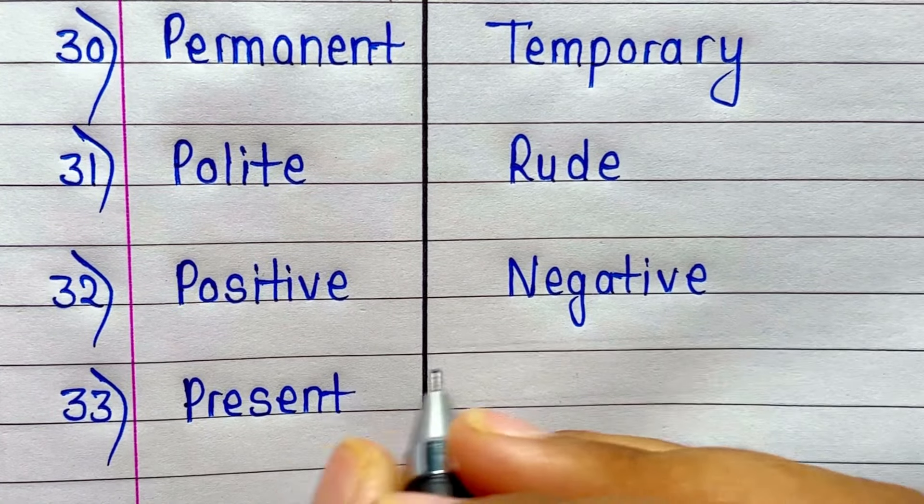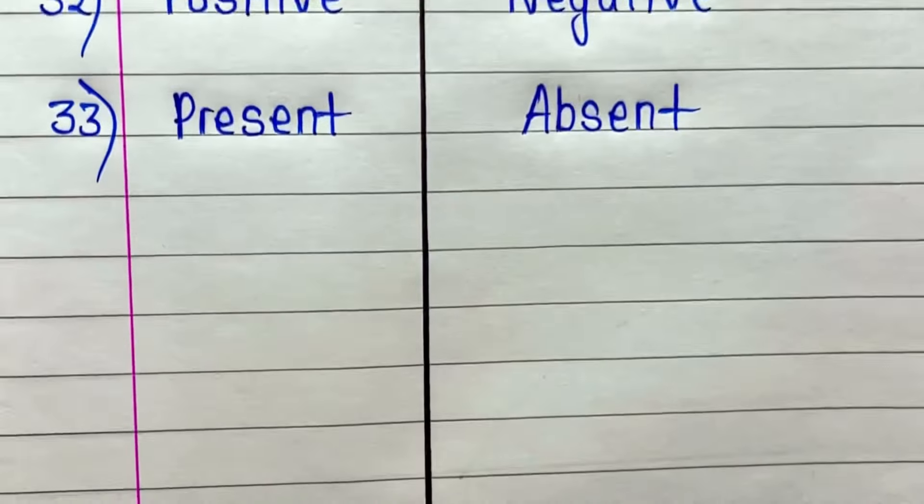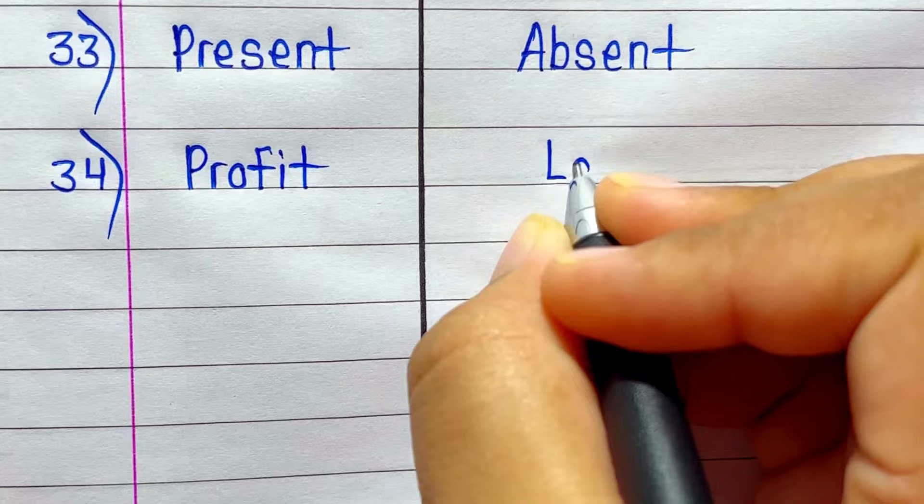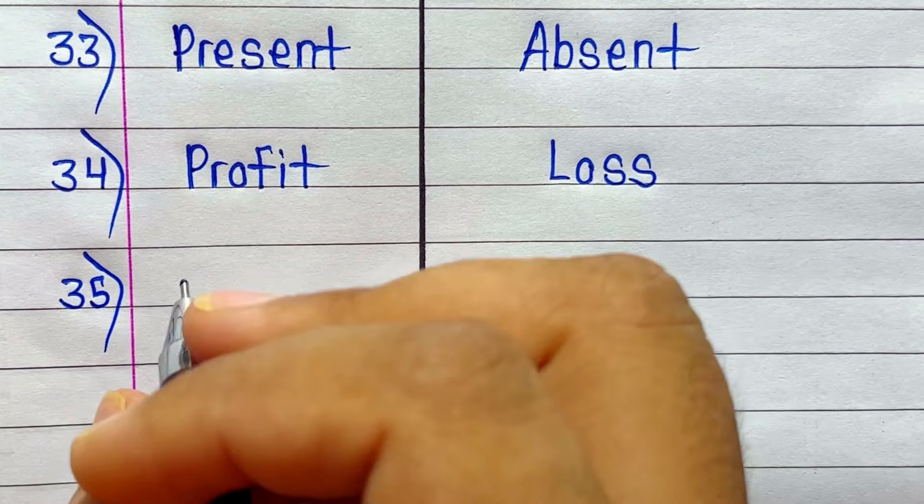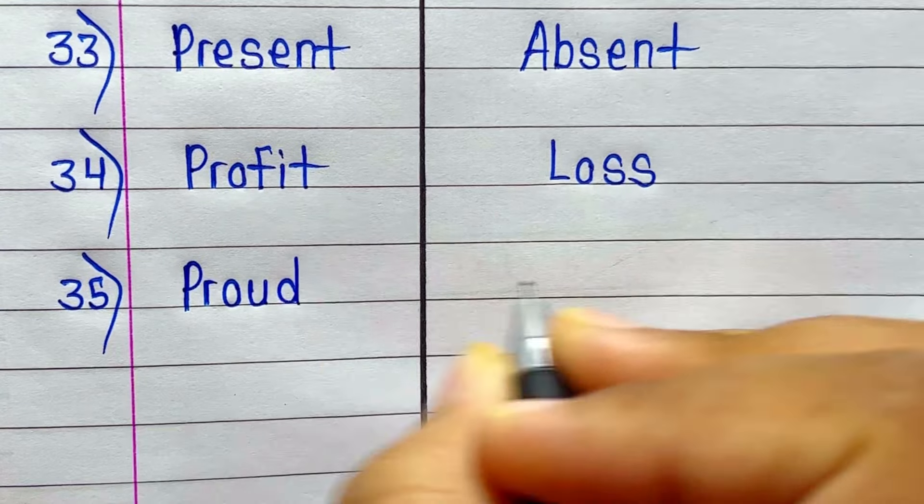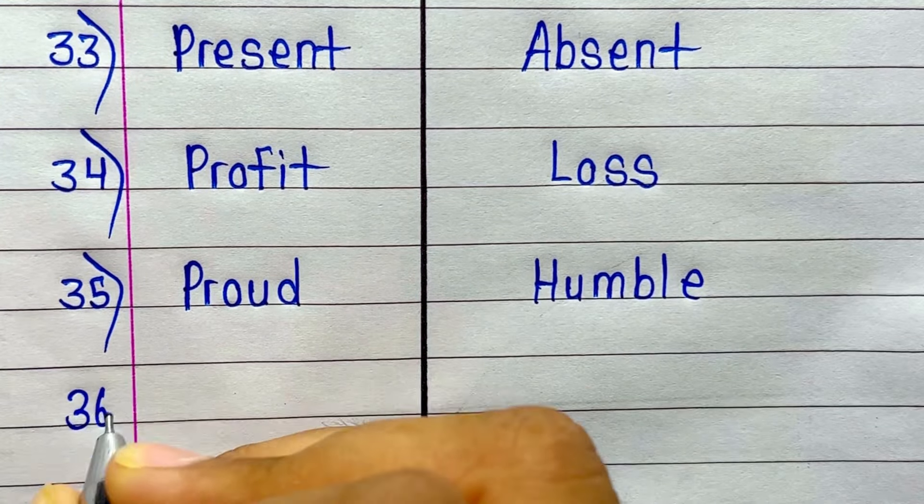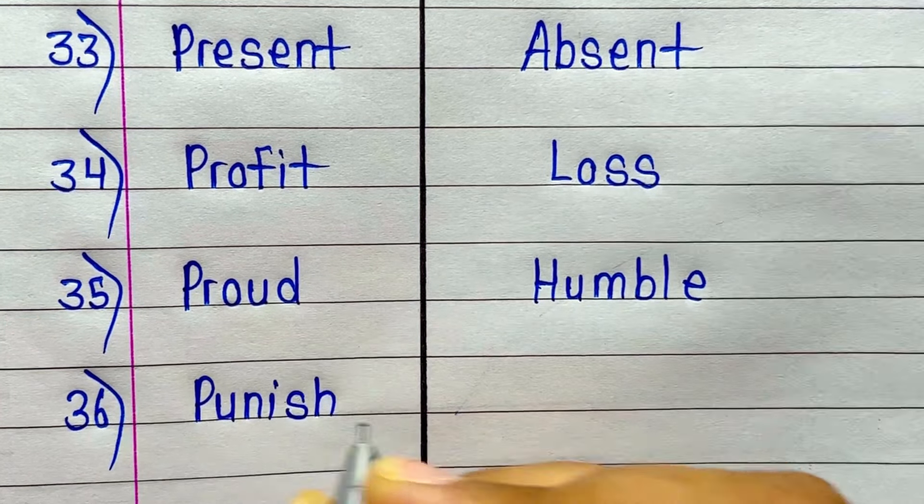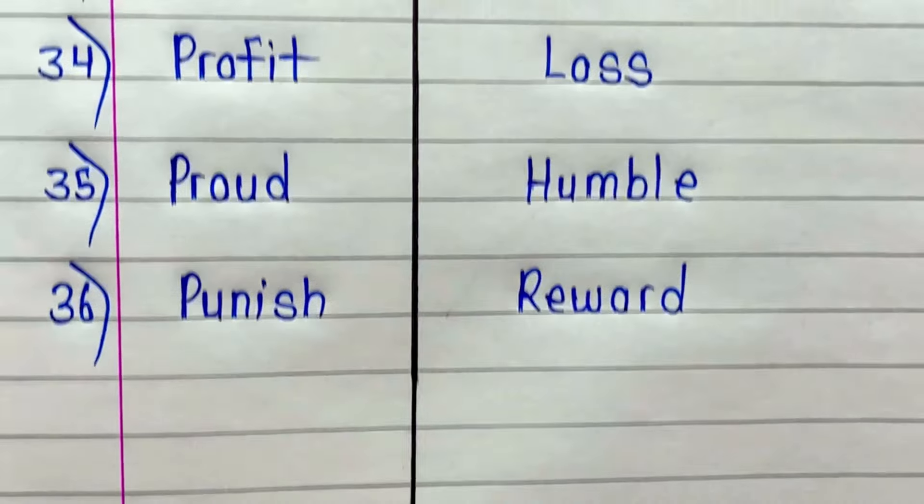Next is Present. Antonym of Present is Absent. Next is Profit. Antonym of Profit is Loss. Proud. Antonym of Proud is Humble. Antonym of Punish is Reward.